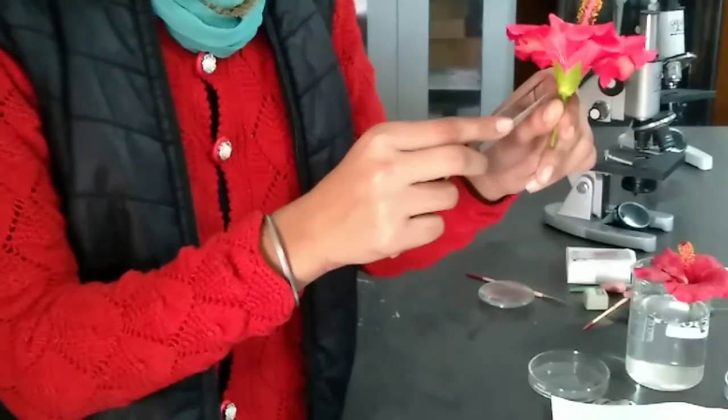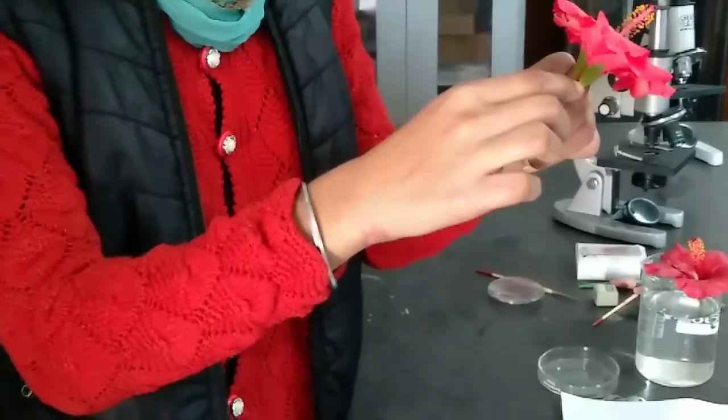Now this one is the calyx. There are five. Now we are going to remove this one here also.